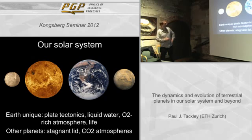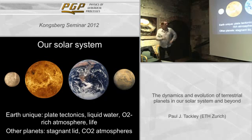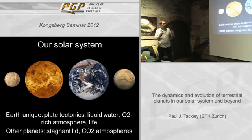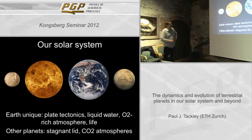You do see some tectonics — some evidence of crustal deformation, also on Mars — but it's not the same as on Earth, where most of the deformation is focused at narrow plate boundaries and the plates are moving as almost rigid entities. The other planets also have atmospheres that are rich in carbon dioxide, not nitrogen and oxygen.